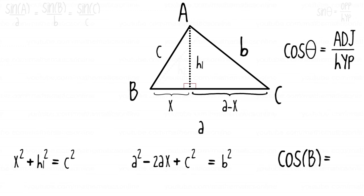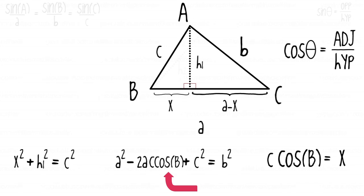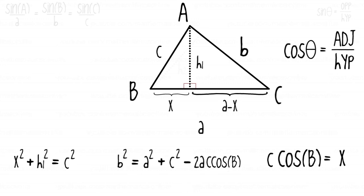We find that cosine of angle B equals the adjacent side x over the hypotenuse c. Solving for x gives us x = c·cosine of B, and we substitute this into the second equation. Rearranging the terms, we now have that b² = a² + c² − 2ac·cosine of B. This is one of the cosine laws.